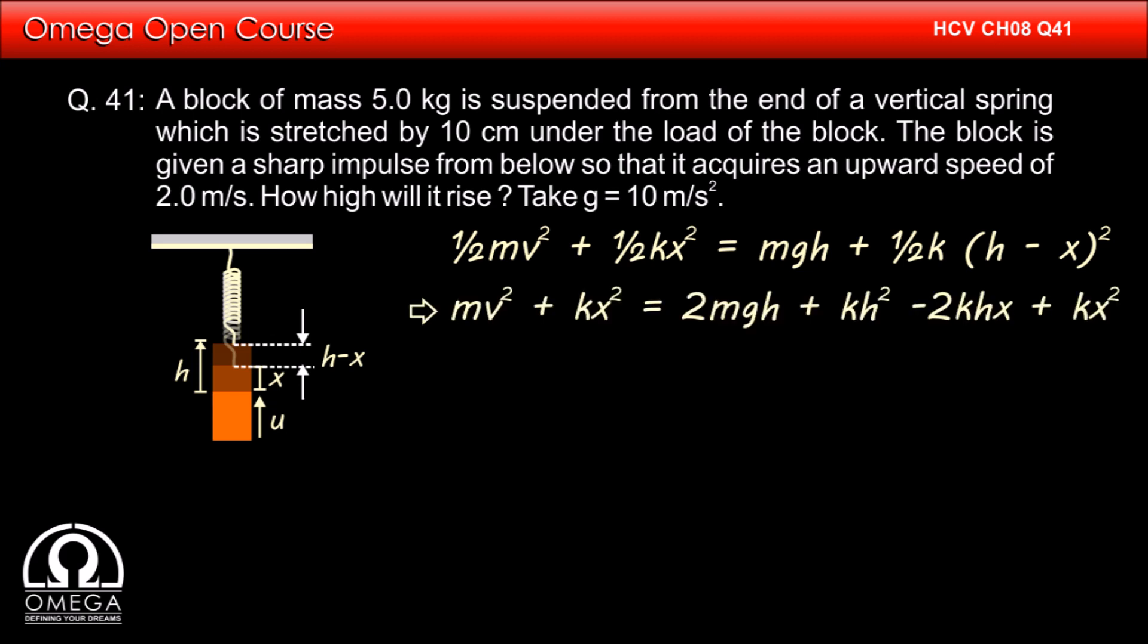Which implies, mv square plus kx square is equal to 2mgh plus kh square minus 2khx plus kx square, or kh square plus 2mgh minus 2khx minus mv square is equal to 0.